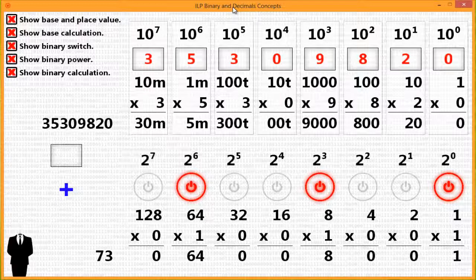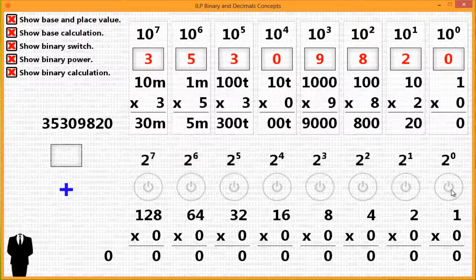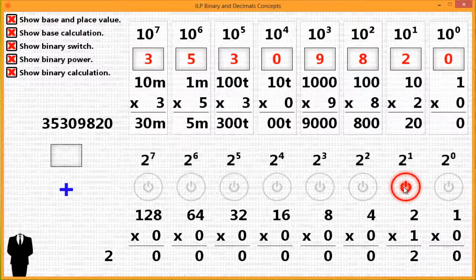Now you could use such a system to count up from 0. So we have 0. If we turn the 0 power on, you have 1. If you turn the 0 power off and 2 to the 1st power on, you have 2.